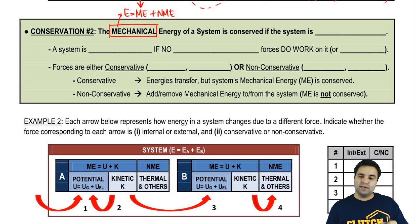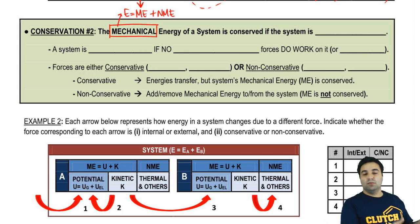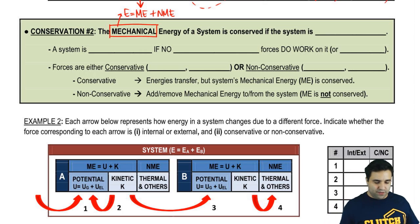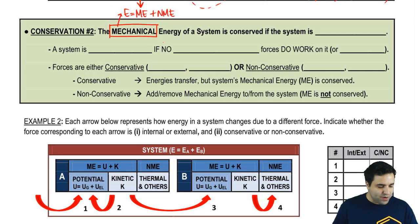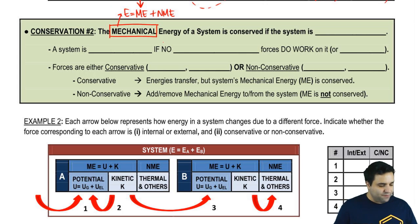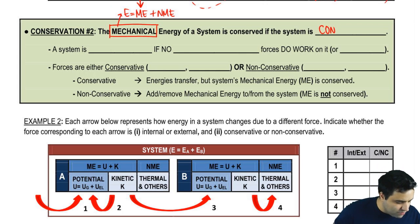This rule is actually the most important one at this point in physics. The mechanical energy of a system is conserved if the system is conservative.